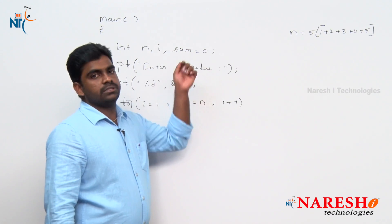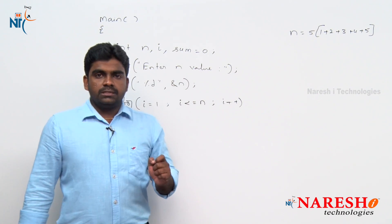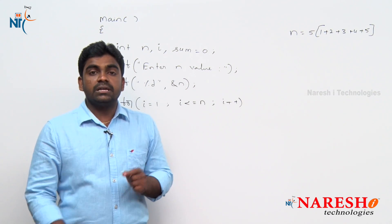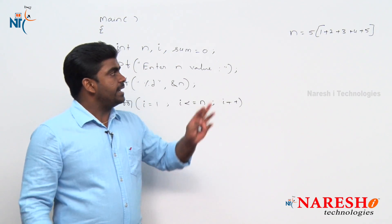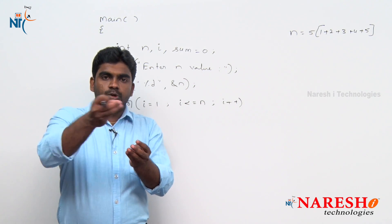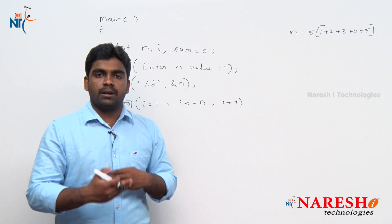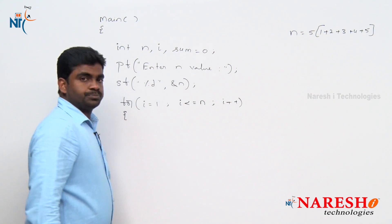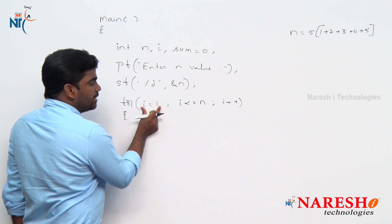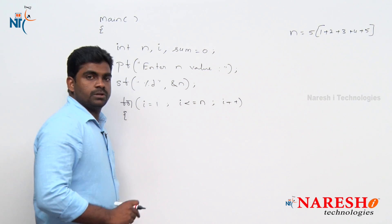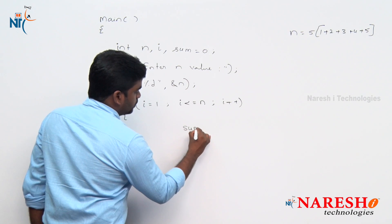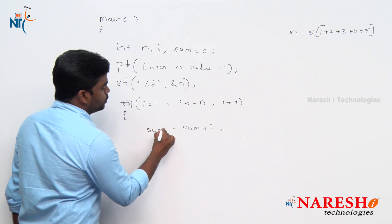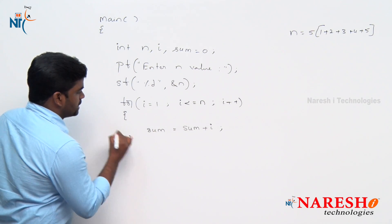Why are we initializing sum with 0? It is a local variable. In C language, if you are not initializing any local variable, it is implicitly initialized with a garbage value. Whenever we are adding values 1, 2, 3, 4, 5, they would be added to the garbage value and finally give another garbage value - that creates a problem. That is why sum = 0. Every time i varies from 1 to 5, we add i to sum: sum = sum + i, and the result is stored into sum.